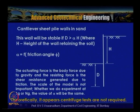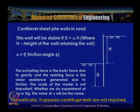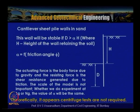The actuating force is the body force due to gravity and the resisting force is the shear resistance generated due to friction. The scale of the model is not important — whether at 1g or ng — provided d is maintained greater than alpha times h. So theoretically centrifuge model tests are not required; however, in the forthcoming slides we will look at how centrifuge model tests show different behavior.